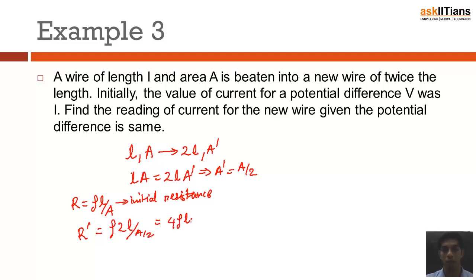Which implies the new resistance is 4 times the initial resistance. Resistance being increased to 4 times my initial resistance, it implies that the new current is one-fourth of the initial current. So this is my final answer.